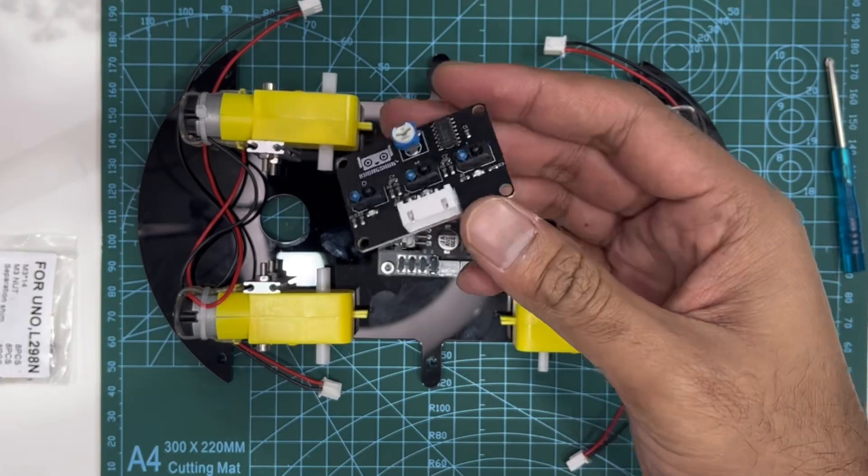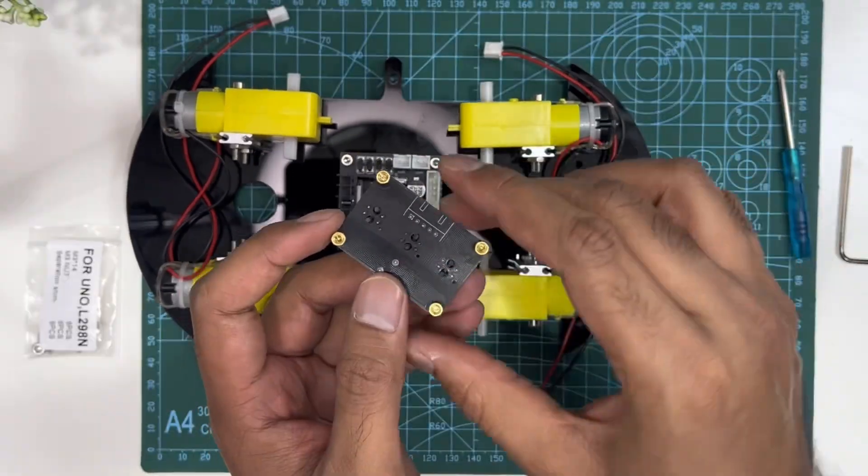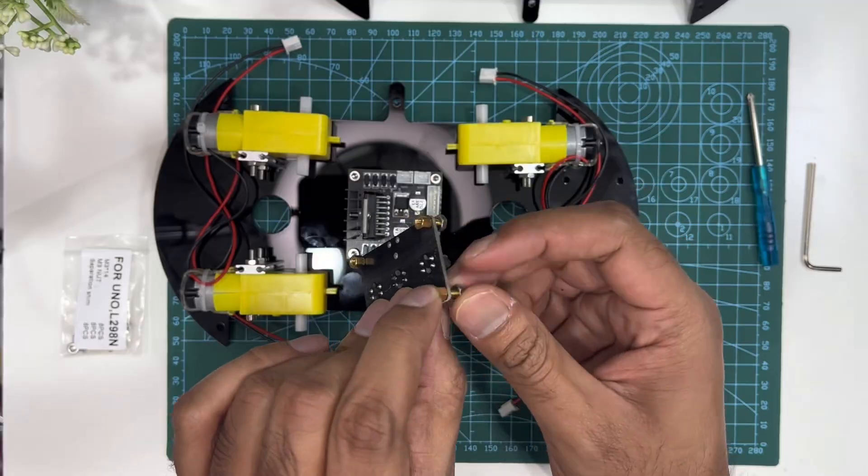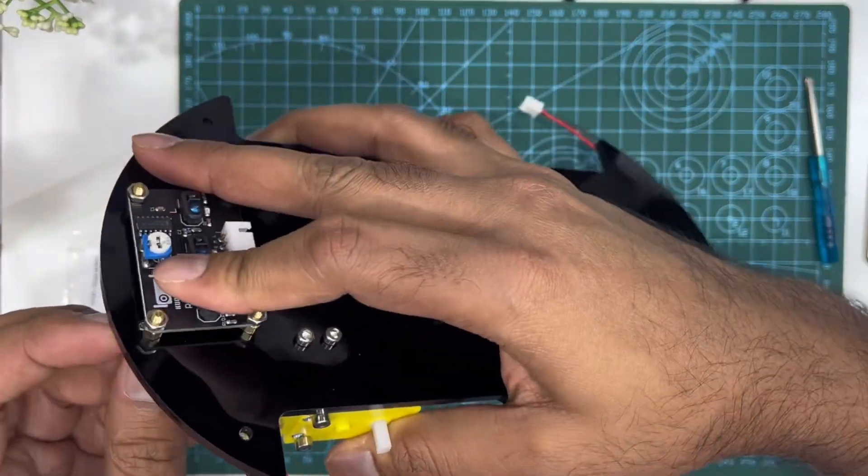Now let's install the line tracking module. Attach the tracker sensor to the front underside of the chassis.